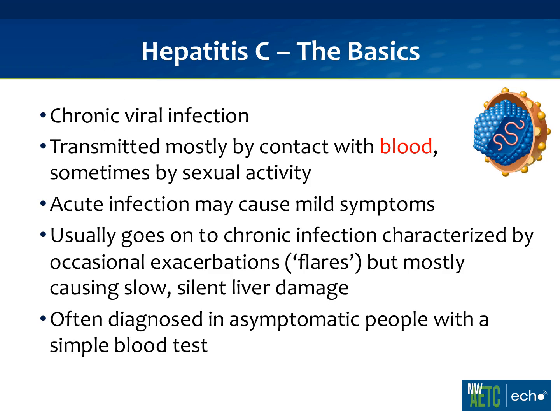Hepatitis C is a single-stranded RNA virus. It's primarily spread through blood — contaminated blood — and that's a key difference between HIV, which is, at least in the United States, spread mostly by sexual activity. There's both an acute and a chronic form, and hepatitis C is a tricky virus because a lot of times patients get infected and they never know they have it. It's been nicknamed the stealth virus for that reason.